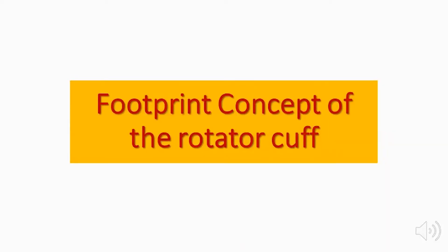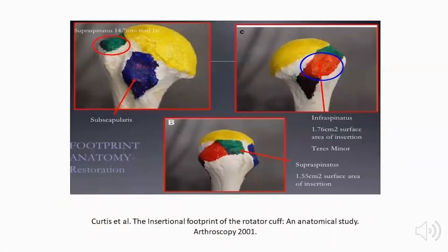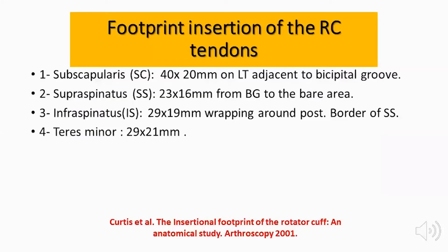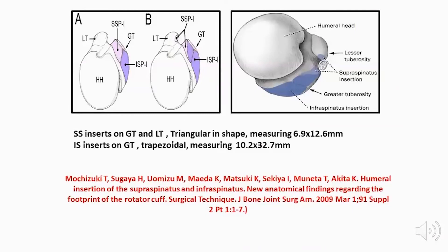We should be aware of the footprint concept of the rotator cuff, which states that the tendons are not inserted at a point but on a surface area. This was first discussed by Kurtz et al. in the Arthroscopy journal in 2001. The footprint insertion for the subscapularis is about 40 by 20 mm on the lesser tuberosity, the supraspinatus 23 by 16 mm, the infraspinatus 29 by 19 mm, and the teres minor 29 by 21 mm, as suggested by Sujaya et al., explaining the different insertions on the facets of the greater tuberosity.